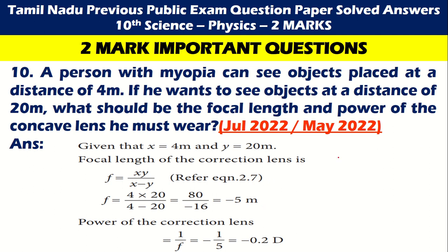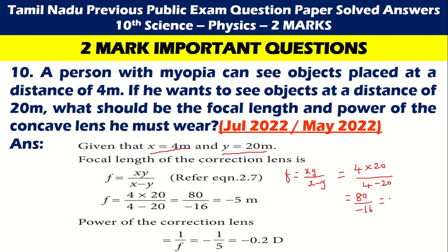A person with myopia — asked in July 2022 and May 2022 — can see objects placed at a distance of 4 meters. If he wants to see an object at a distance of 20 meters, what should be the focal length and power of the concave lens? Given: x = 4 m, y = 20 m. Formula: f = xy / (x − y) = (4 × 20) / (4 − 20) = 80 / −16 = −5 meters. Power = 1/f = 1/−5 = −0.2 D.